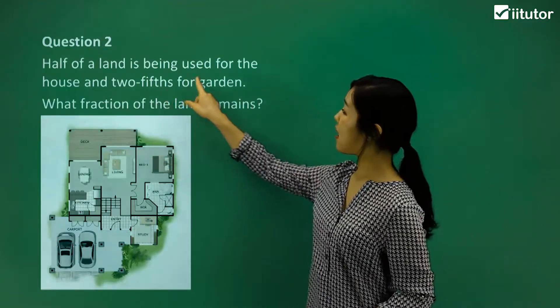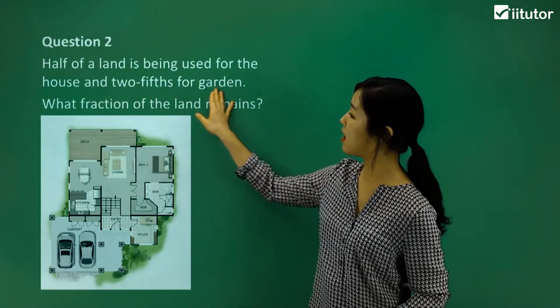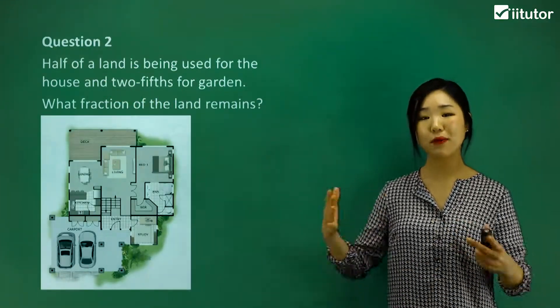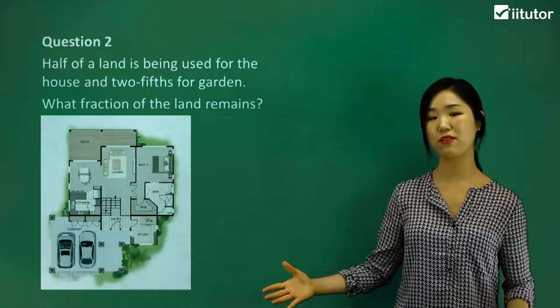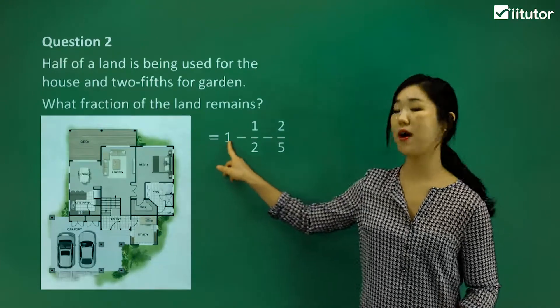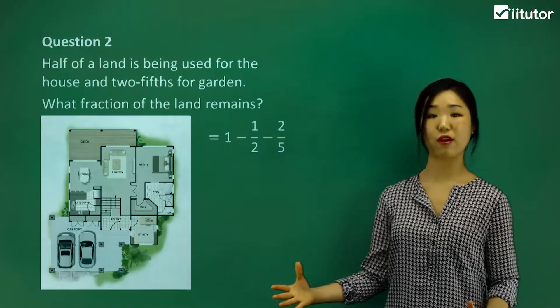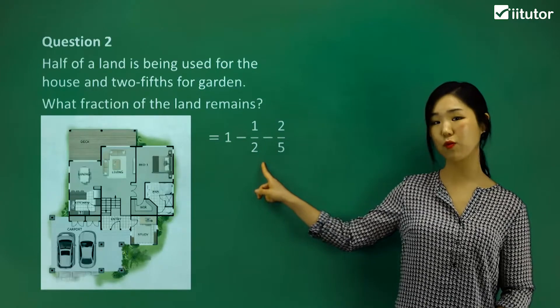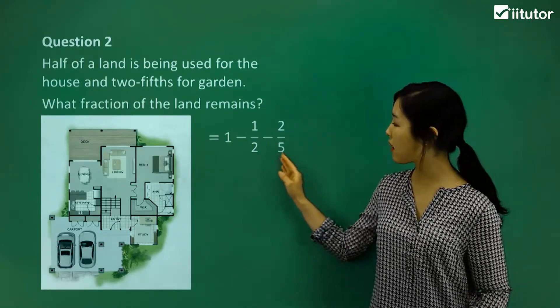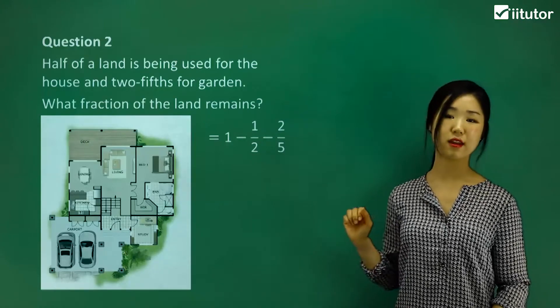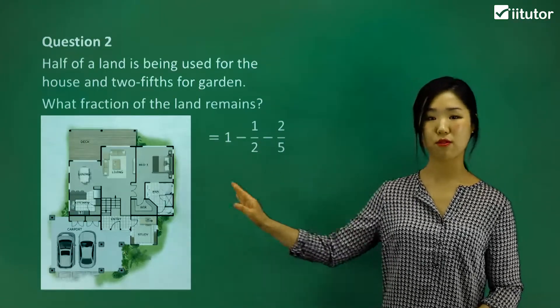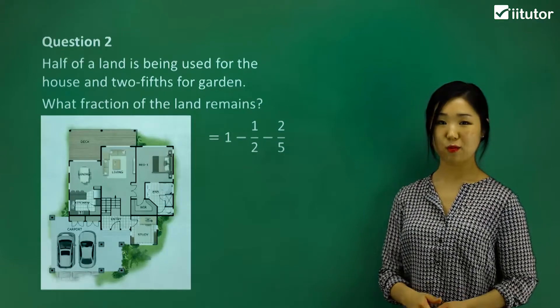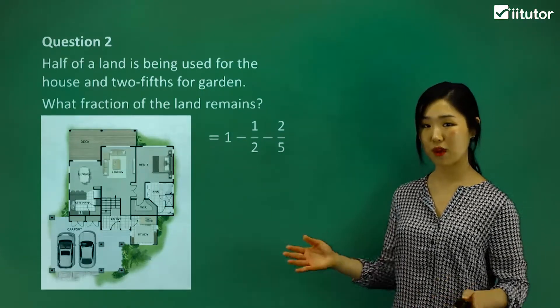For the house, it's half, and two-fifths for the garden. The complete land, 100%, we'll call that one. One is a complete 100% fraction, so that's the total. From the total fraction, I'm going to subtract away half for the house, and also take away two-fifths for the garden. So I'm just subtracting it away from the total fraction.